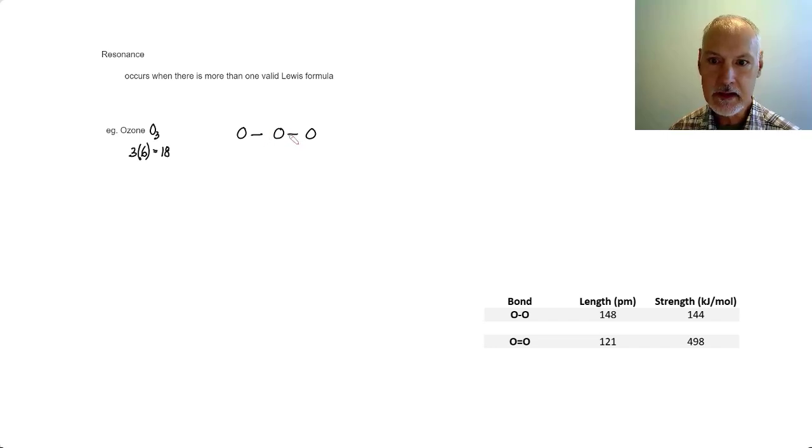We'll put a pair between those oxygens. We'll complete the octets of the species on the outside. At that point, I've used up 16 of the electrons. I'll give the remaining pair to the central oxygen.